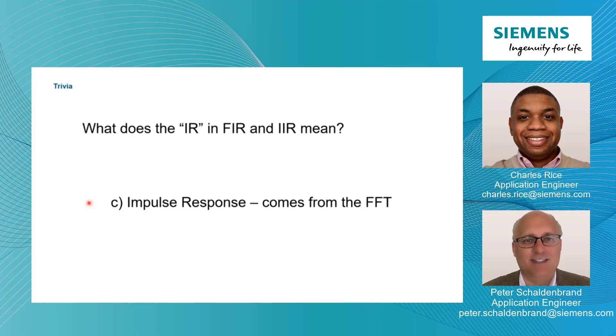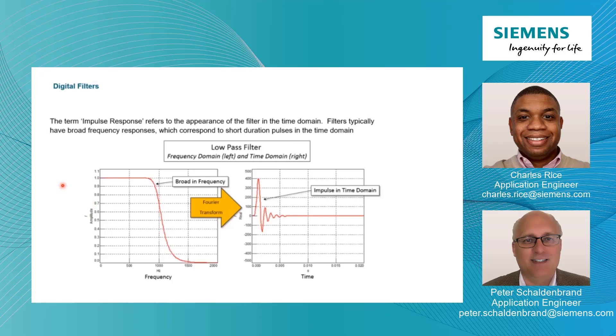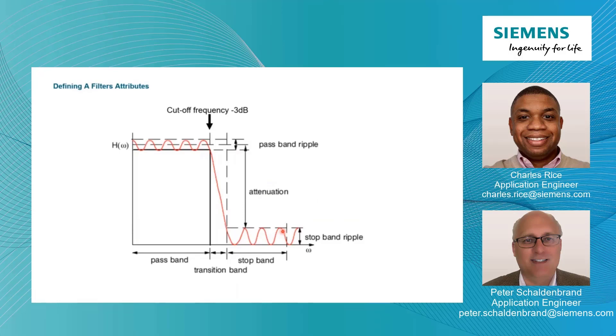What does the IR in FIR and IIR mean? Well, it means impulse response. And the reason is that term refers to the appearance of the filter in the time domain. A response that's really short in the time domain, like an impulse or impact, has a broad frequency response. Well, obviously the inverse would be true too. Filters typically have a broad response in the frequency domain, so in the time domain this is represented more as an impulse. Many times we define filters when we talk about the characteristics in the frequency domain, but they really do their work in the time domain.